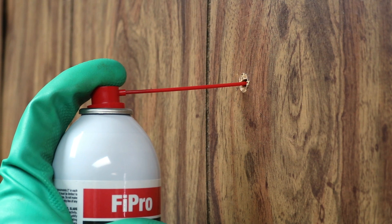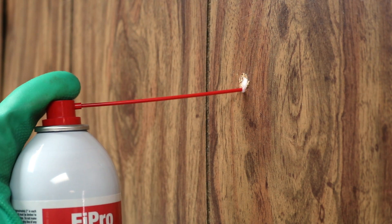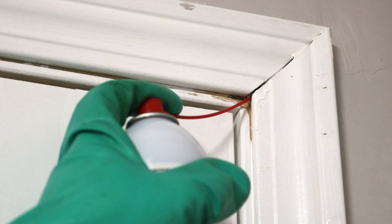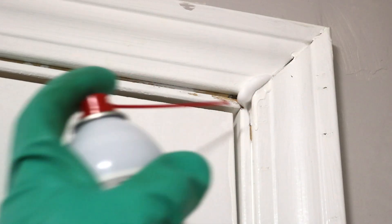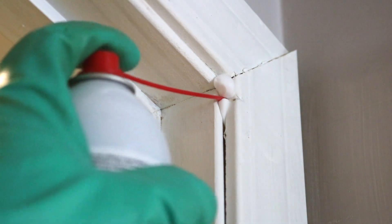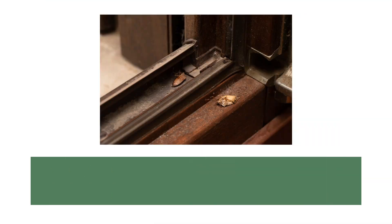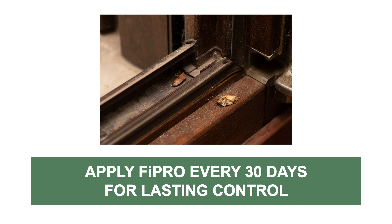After application, hold the can in place for about 8 seconds to allow the product in the straw to dispense into the treatment area. When applied properly, insects will unknowingly make contact with the product and spread it throughout the population, resulting in a systemic elimination. Fipro has a long-lasting residual and will protect treated areas from overwintering pests, but we recommend you make follow-up applications every 30 days for total protection.